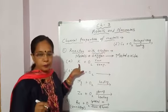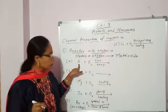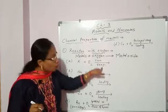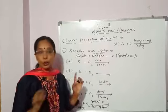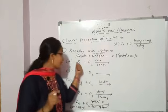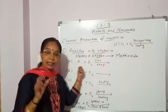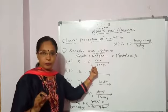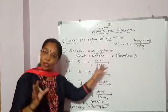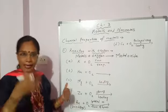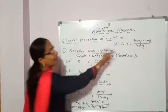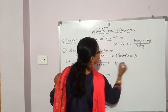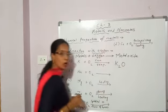First, potassium. Potassium is a metal. It reacts with oxygen at room temperature — no need to heat — which means it is a very reactive metal. Potassium reacts with oxygen at room temperature and what is formed? Metal oxide — potassium oxide, K₂O.